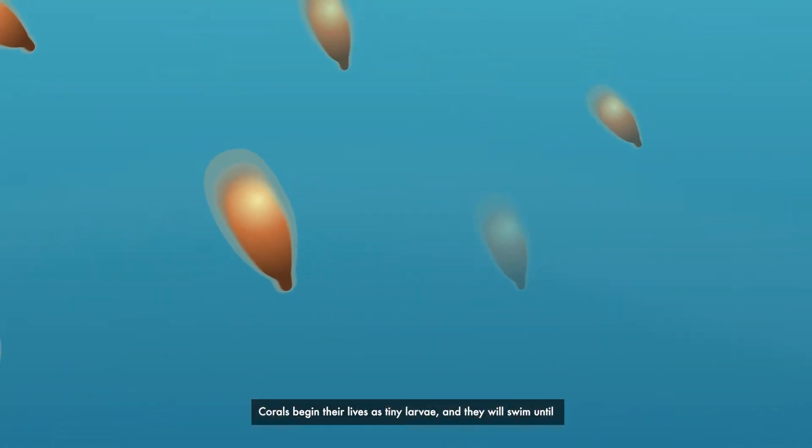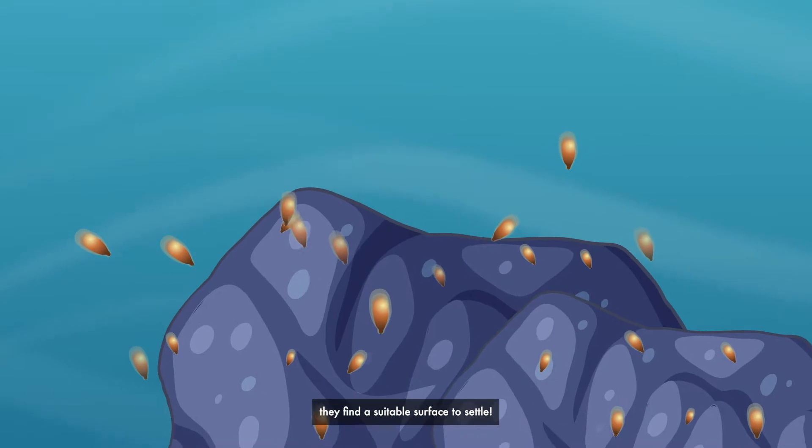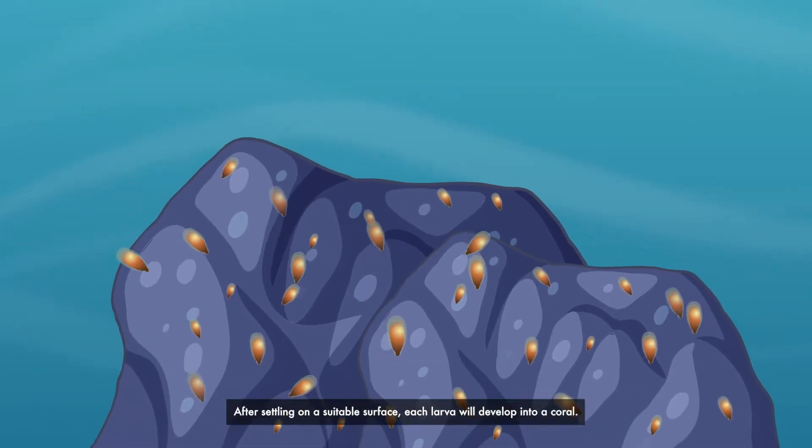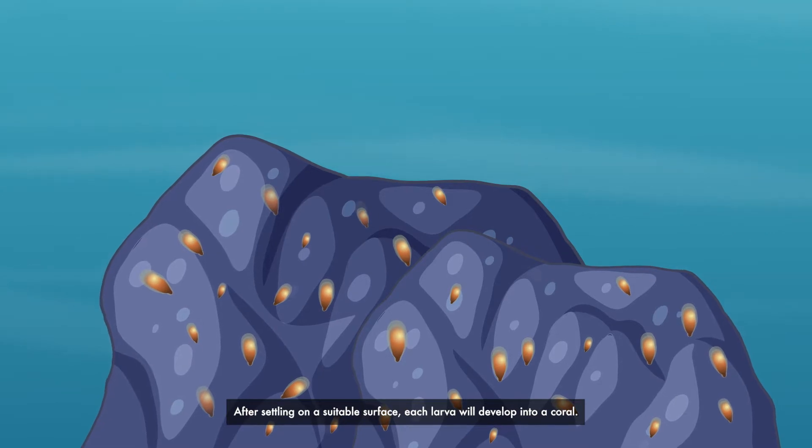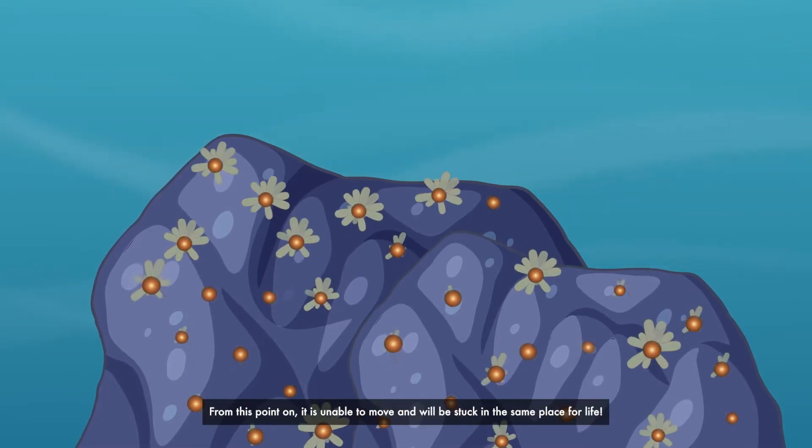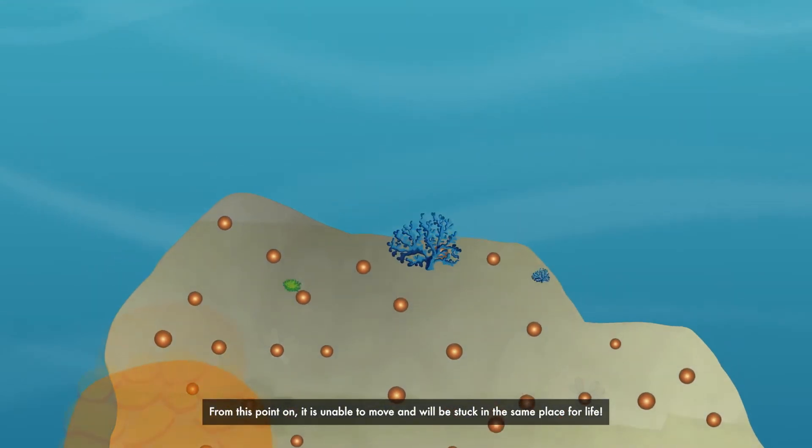Corals begin their lives as tiny larvae, and they will swim until they find a suitable surface to settle. After settling on a suitable surface, each larva will develop into a coral. From this point on, it is unable to move and will be stuck in the same place for life.